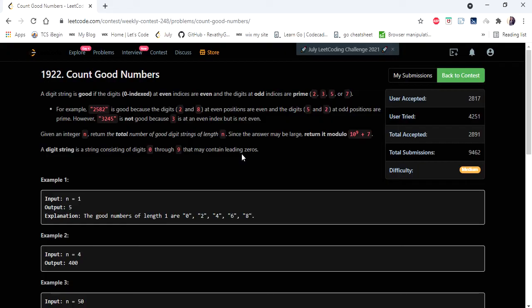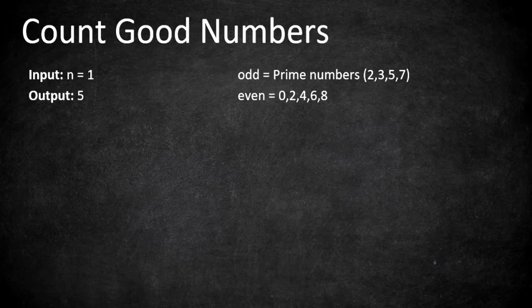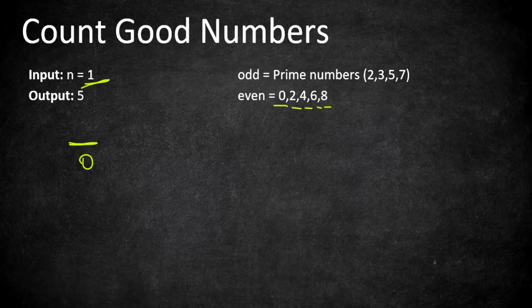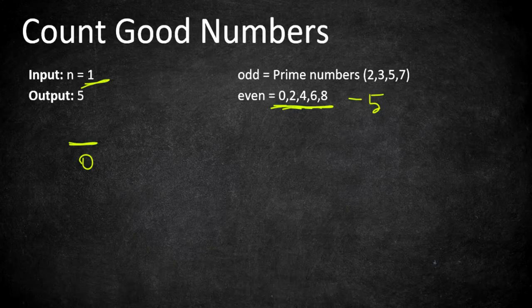Let's understand this problem with an example. Consider n equals 1. The number's length is 1, so it is at the zeroth index, which is an even index. This index can only have even digits less than 10, which are 0, 2, 4, 6, 8 — a total of 5 even numbers. So the possible strings you can form is 5.